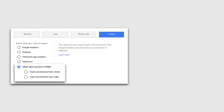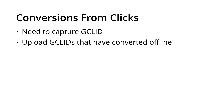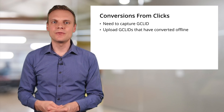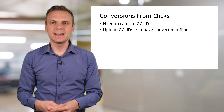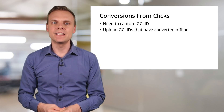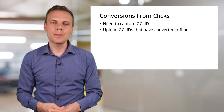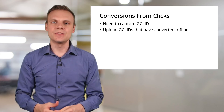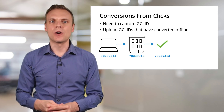If we select this option, we can import conversions based on people clicking through on our ads, and we can import our own call data. Using the conversions from clicks option means we need to capture details about the click on our ad that later led to an offline conversion — specifically, we need to capture the GCL ID, which is a unique identifier for the individual click from our ad. We can capture the GCL ID using a hidden field in our website's lead form, so when people submit their details we also receive information about the click. Once captured, we can upload the IDs for people who have converted offline, allowing us to see which campaigns, keywords, and ads led to offline conversions.